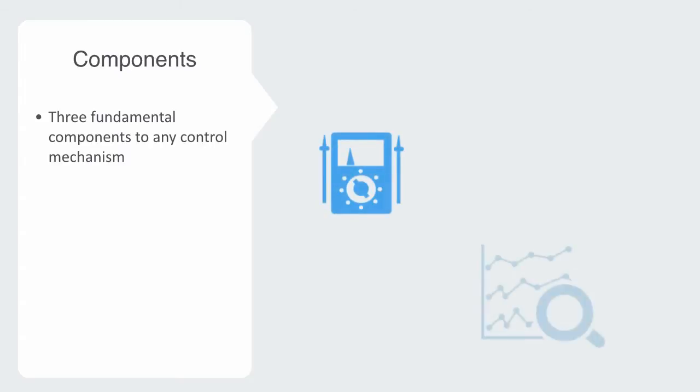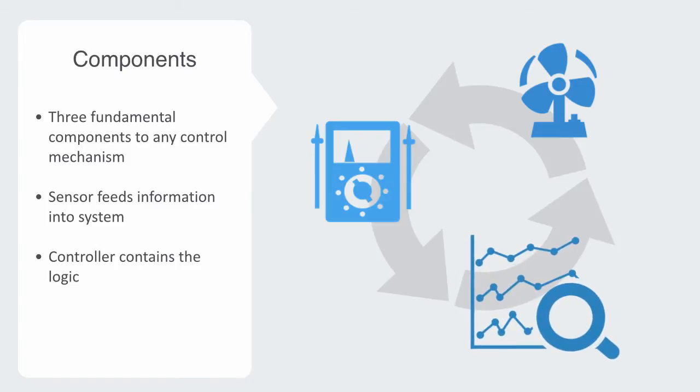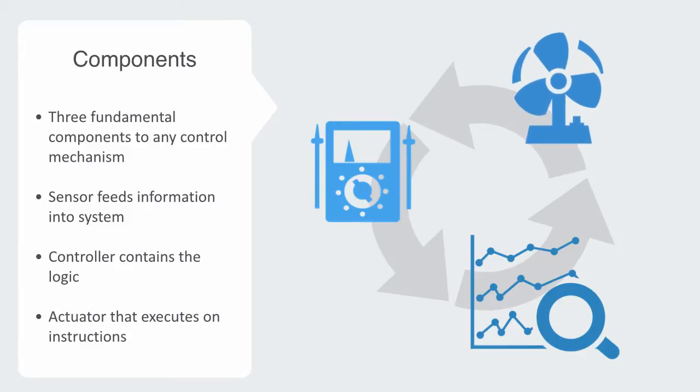All of these very diverse systems share a basic underlying set of relations and components that are common to all regulatory systems. There are essentially just three components to any given control mechanism. Firstly, we need a sensor for feeding information into the system, secondly, a controller that contains the logic or set of instructions for processing this information, and lastly, an actuator that executes some action in order to affect the state of the system or its environment.